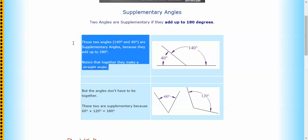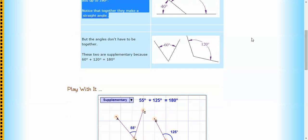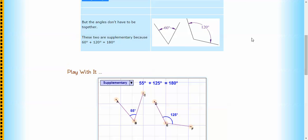So as you see here, if you've got 40, its supplementary angle is 140 degrees. Again, they don't have to be together, but they might be sometimes.